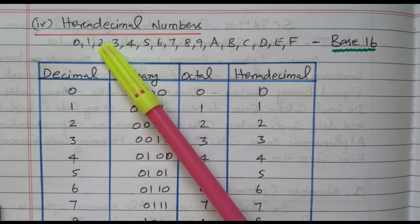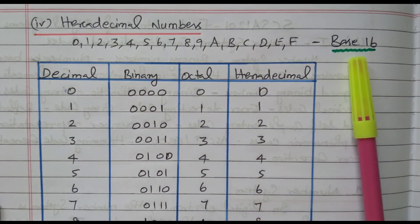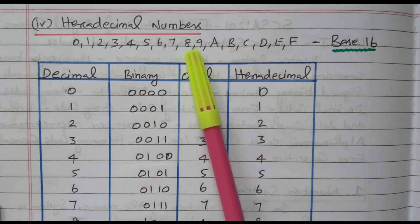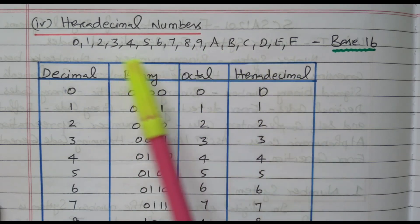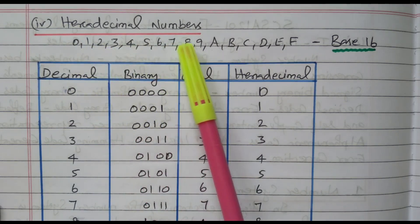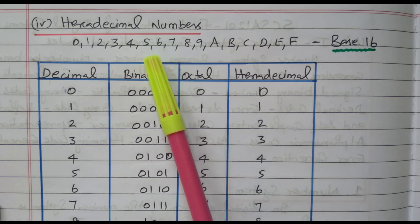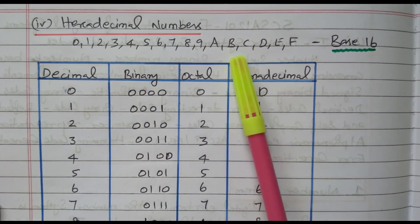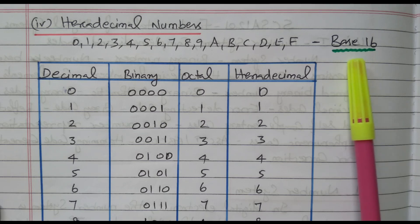The fourth one is the hexadecimal number system. The base is 16 — there are 16 digits available. It is a combination of numbers and alphabets: digits 0 to 9 (10 numbers) plus 6 alphabets A, B, C, D, E, F. So hexadecimal is a combination of numbers and alphabets, totally 16 digits, represented as base 16.